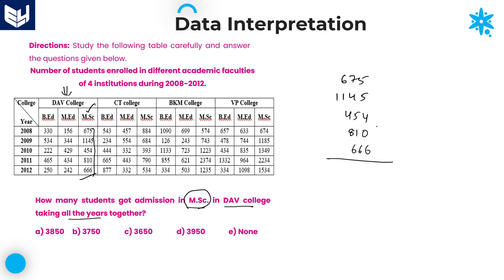Continuing the addition: 7 plus 4 is 11, plus 5 is 16, plus 1 carry gives 17, plus 6 is 25 — carry 2. Then 6 plus 1 is 7, plus further digits gives 27, carry 2. Final result: 3750. Option B is the right answer.